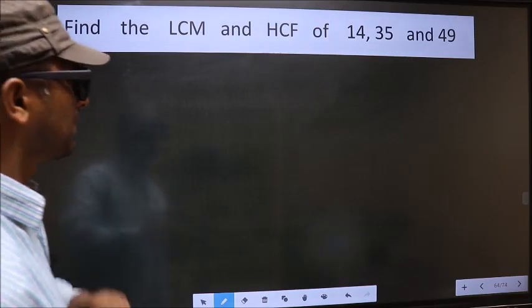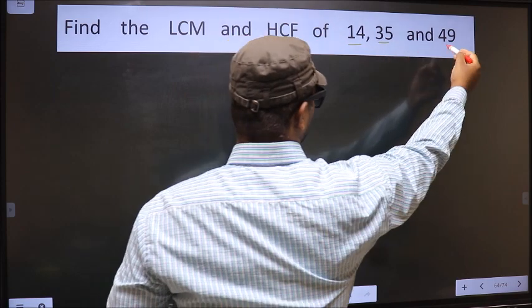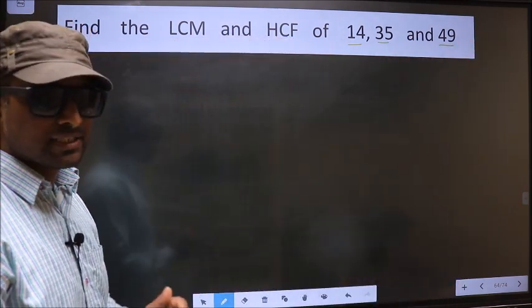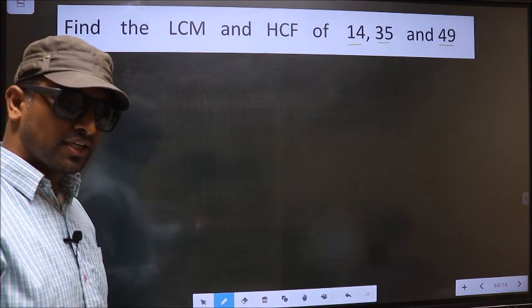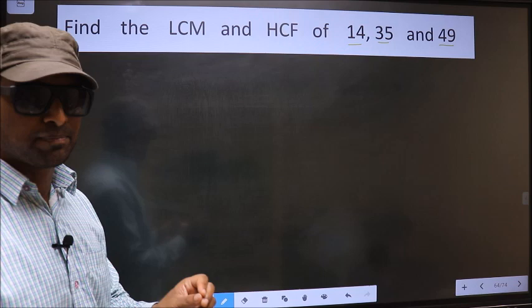Find the LCM and HCF of 14, 35, and 49. To find the HCF and LCM, first we should do the prime factorization of each number separately.